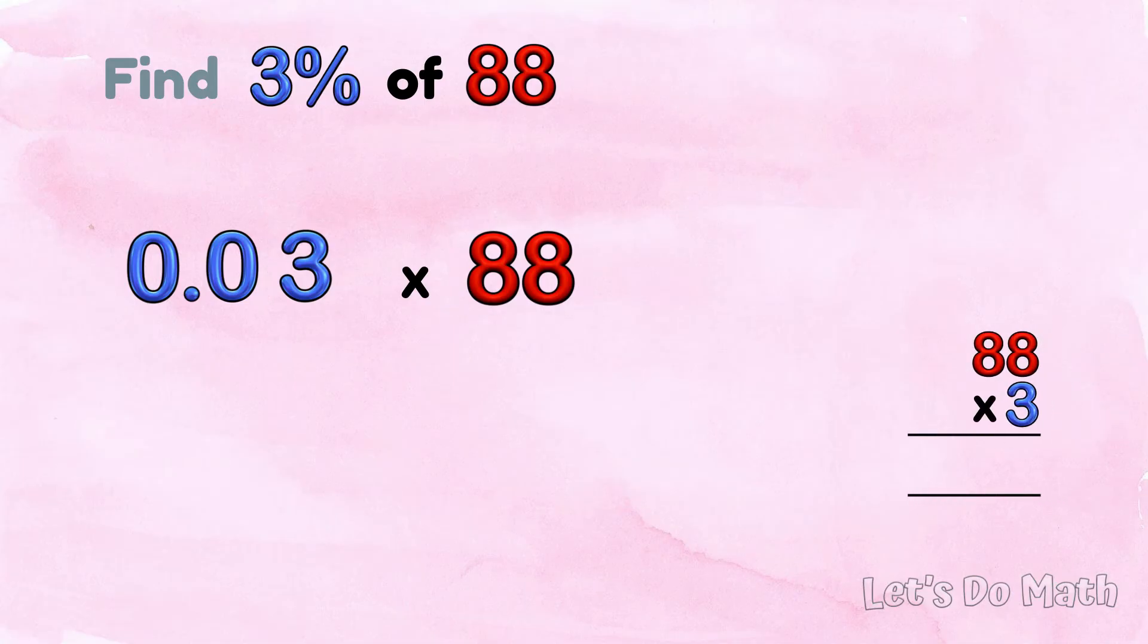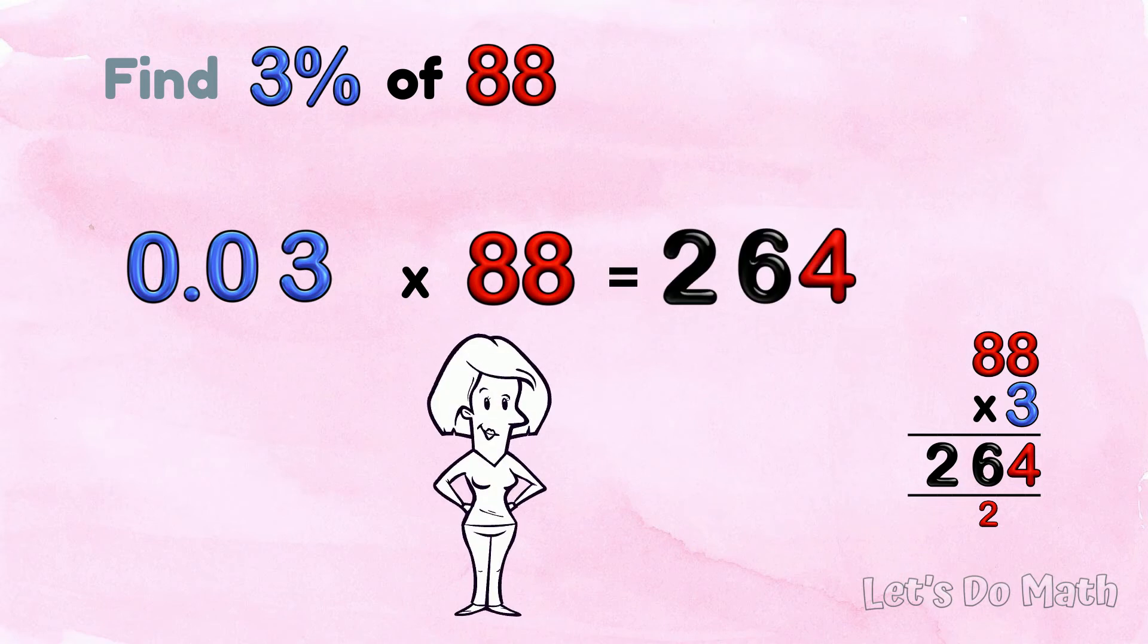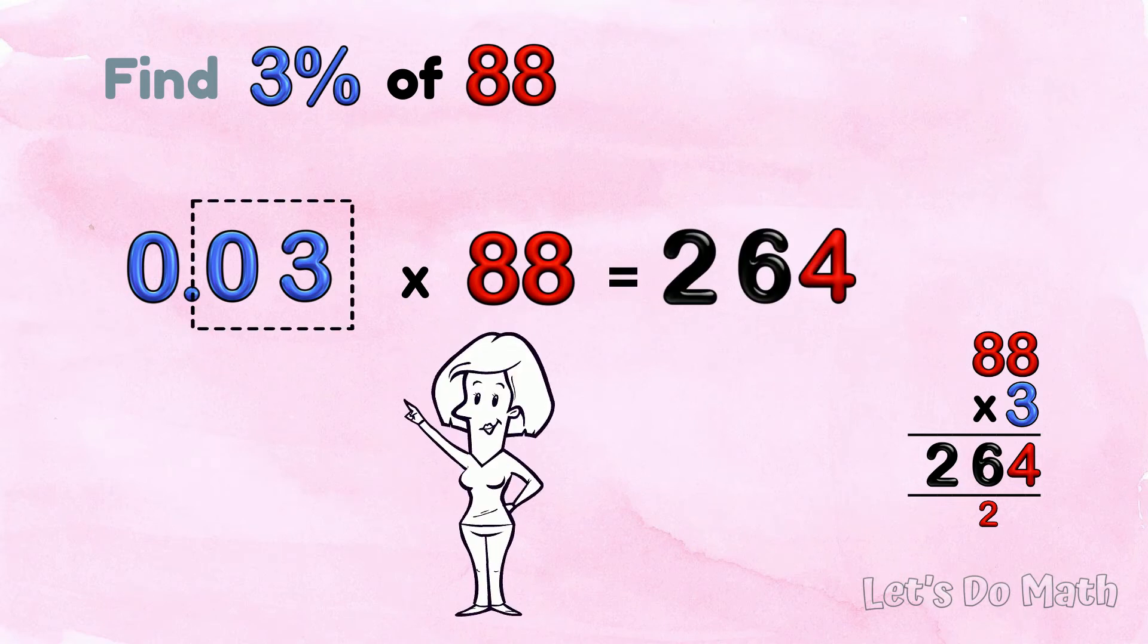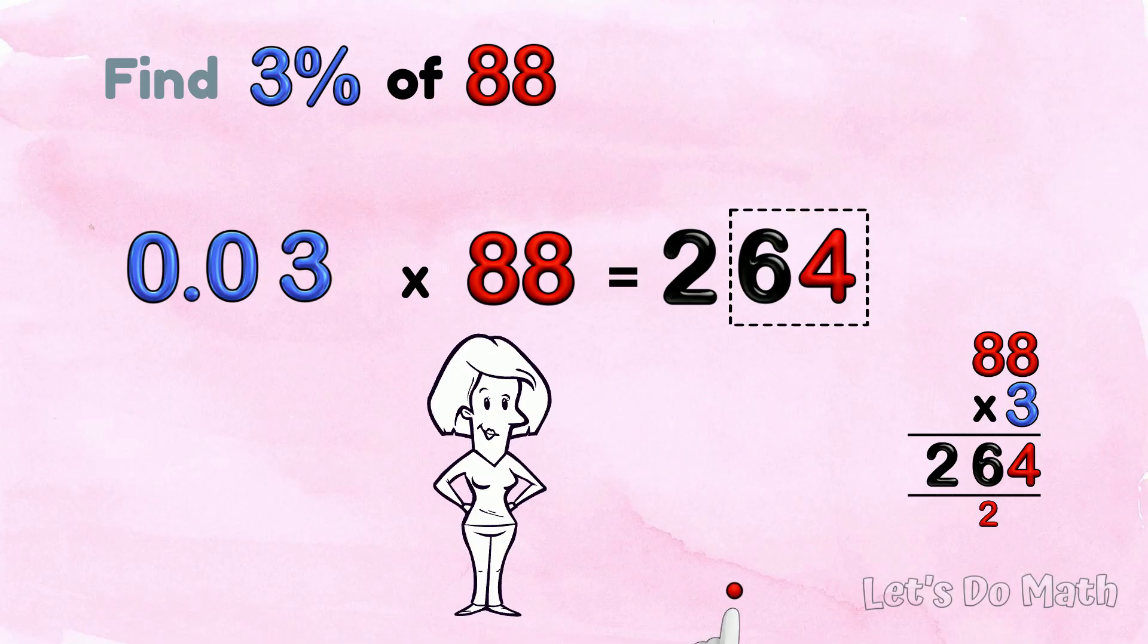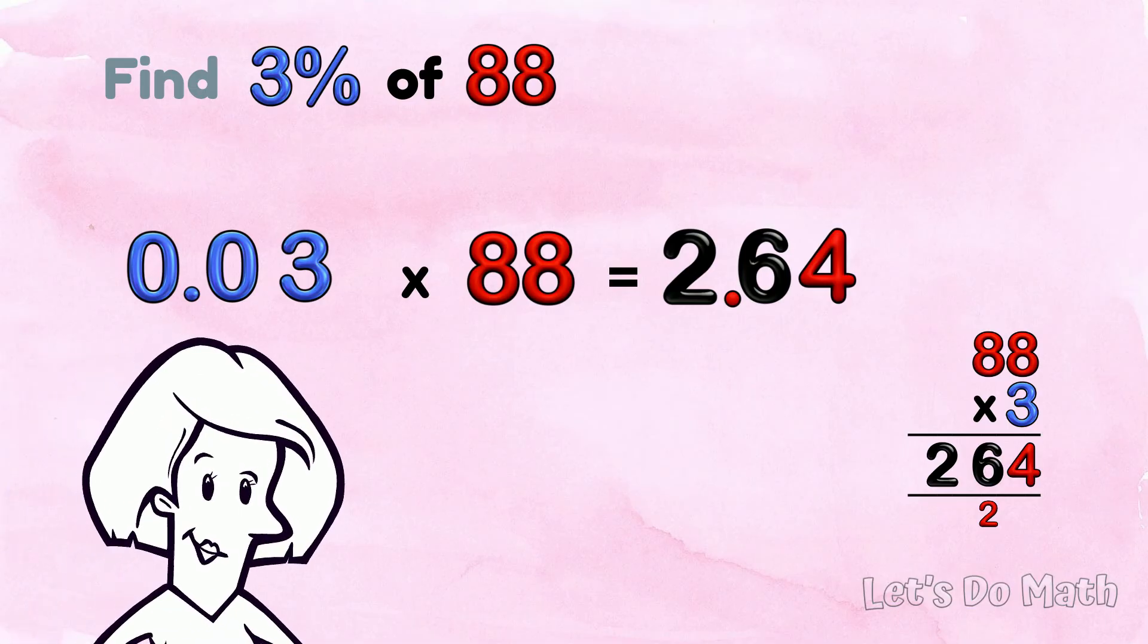88 x 3. 3 eights are 24, and 3 eights are 24 again. Plus 2 is 26! Now for the decimal point - 2 decimal figures in the problem, 2 decimal figures in the answer. So 3% of 88 is 2.64. Think about that for a moment!